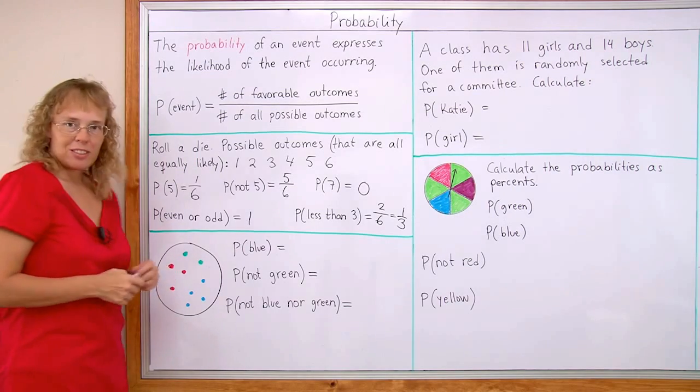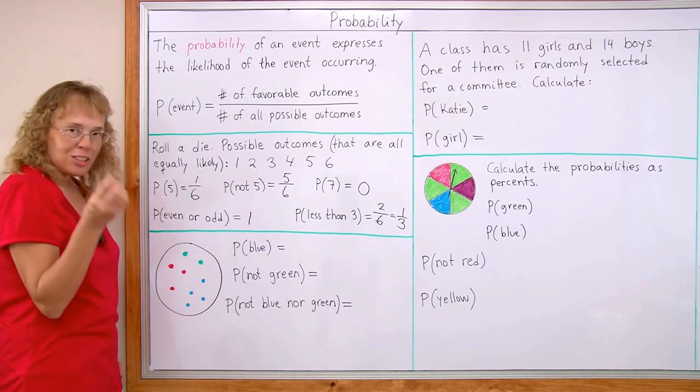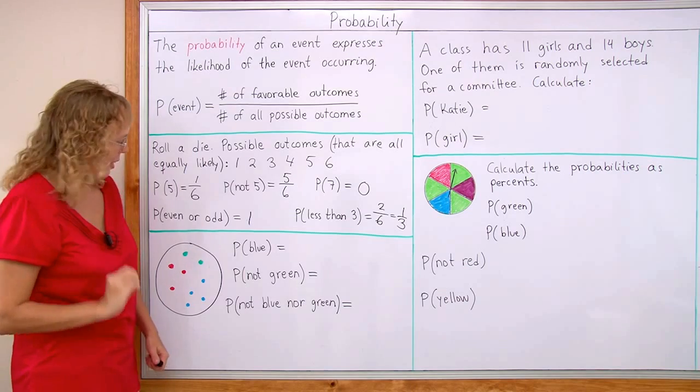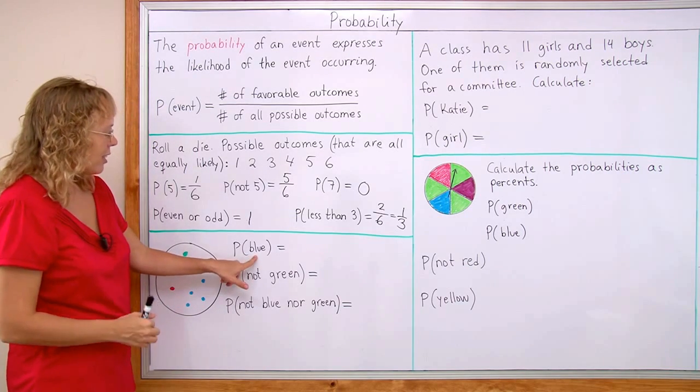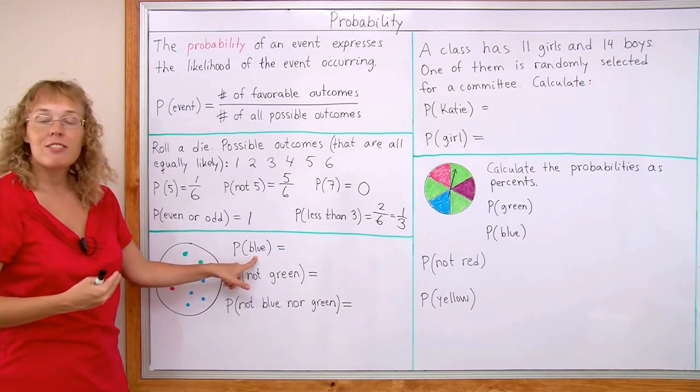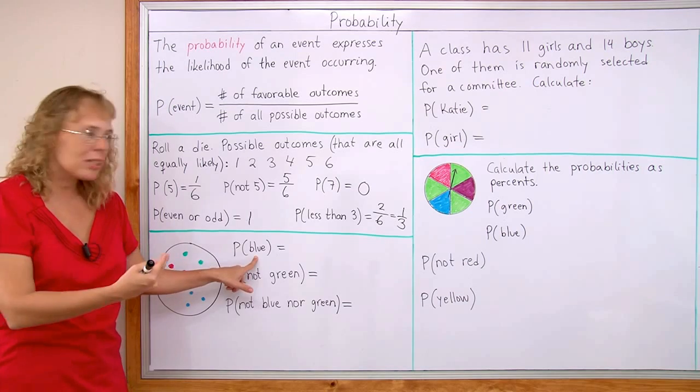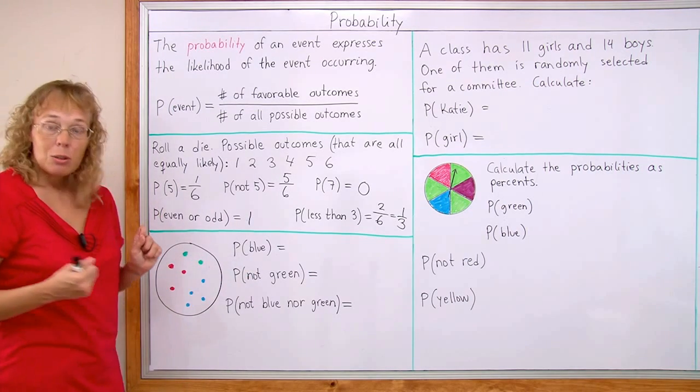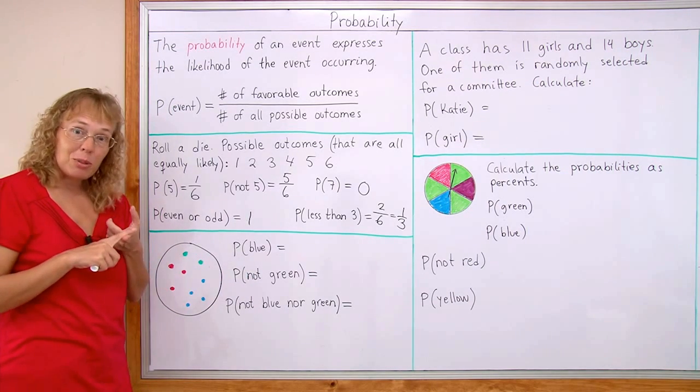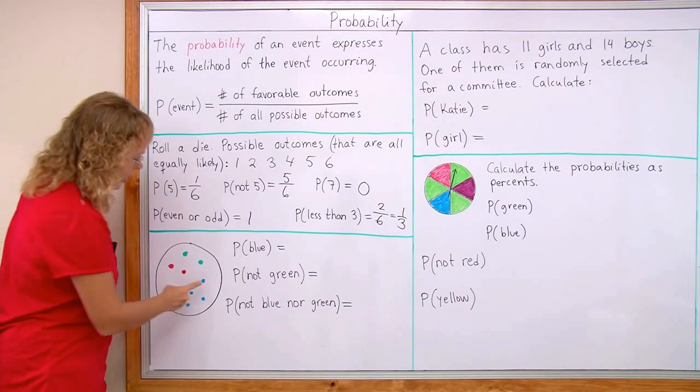Over here we have an experiment where we randomly grab one marble from this bag. And these are our events. We're looking at the events of getting a blue marble. What's the probability of getting blue?